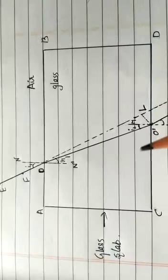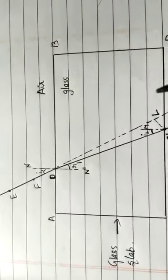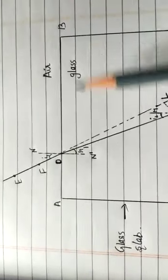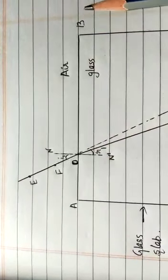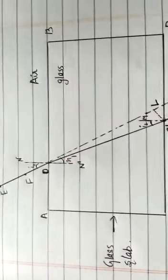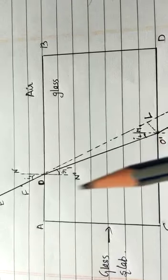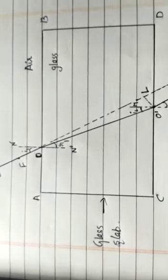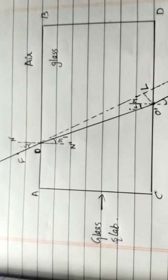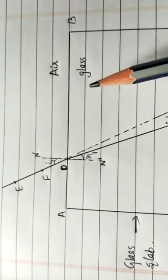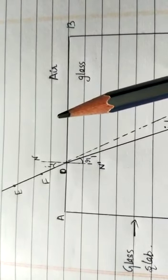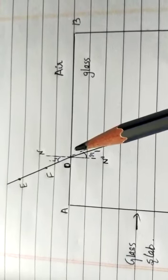O and O' are the interfaces between the two media — air-glass and glass-air. Next, draw a perpendicular NN' perpendicular to AB at point O, and similarly MM' perpendicular to CD at point O'. Draw these perpendicular lines. The light ray at point O has entered from rarer medium to denser medium.